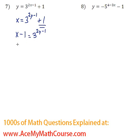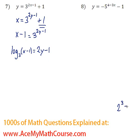Now I'm going to change this equation from exponential form to log form. The base of the exponent becomes the base of the log, and the exponent just comes down. For example, 2 to the power of 3 equals 8 — switching this from exponential to log form: the 2 becomes the base of the log, the 8 comes down here, and the exponent 3 just stays on the other side. I did the exact same thing here.